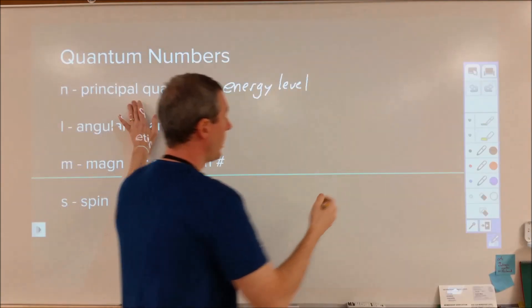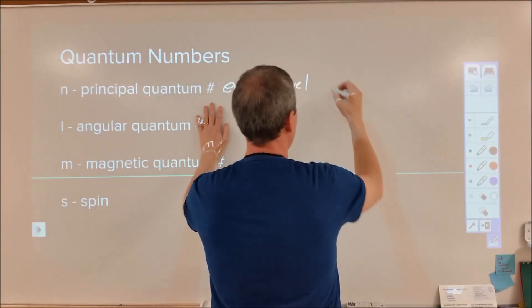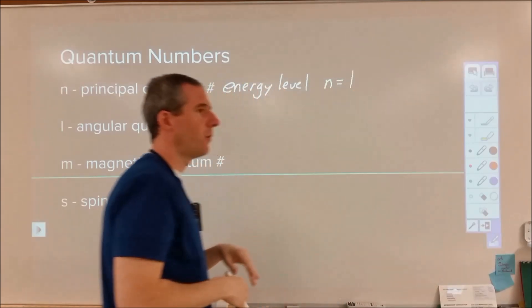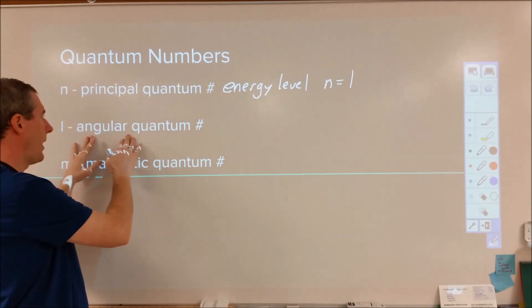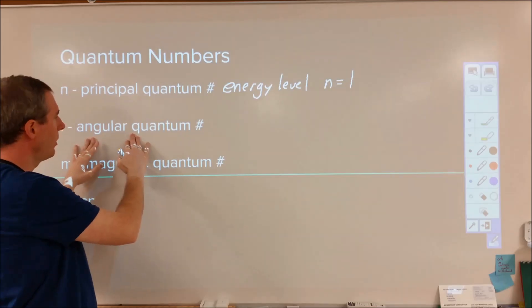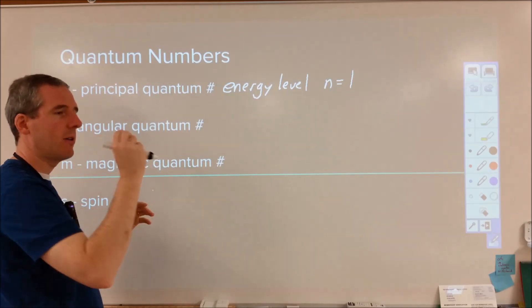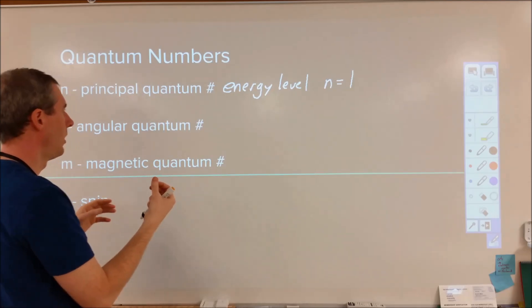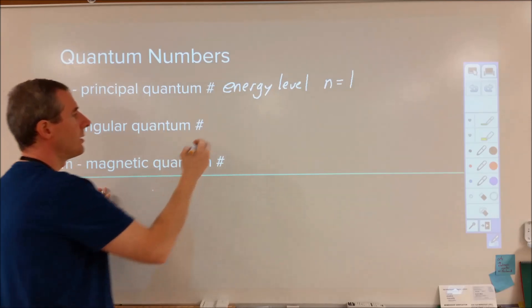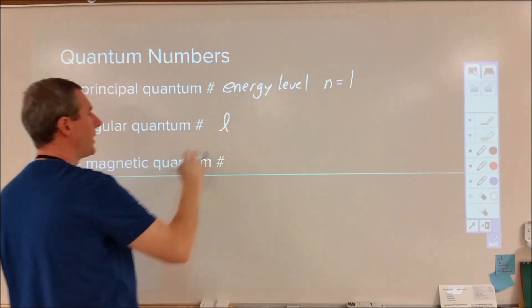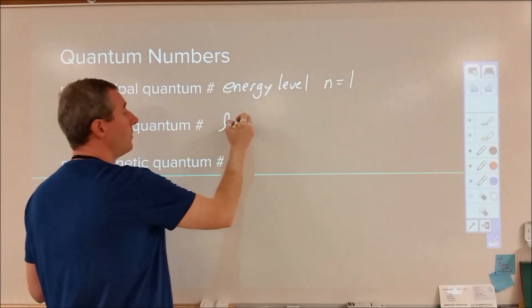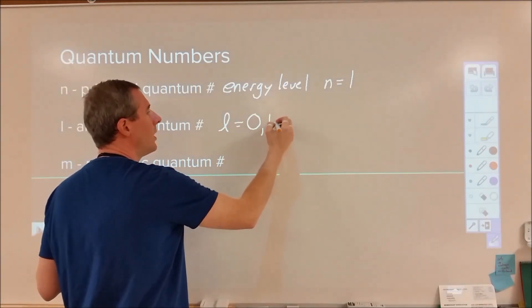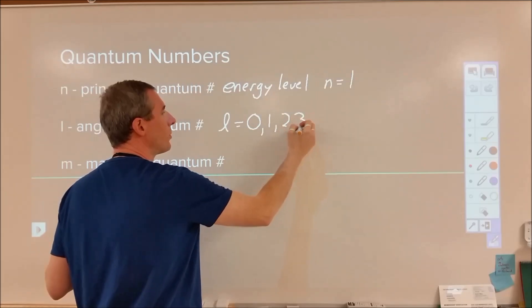The first energy level is where we start, at n equals 1, then 2, 3, 4, 5, 6, 7. L is your angular quantum number — it describes how the electron is moving about the atom, its angular momentum. L can be 0, 1, 2, or 3 — it can go beyond that but usually doesn't.